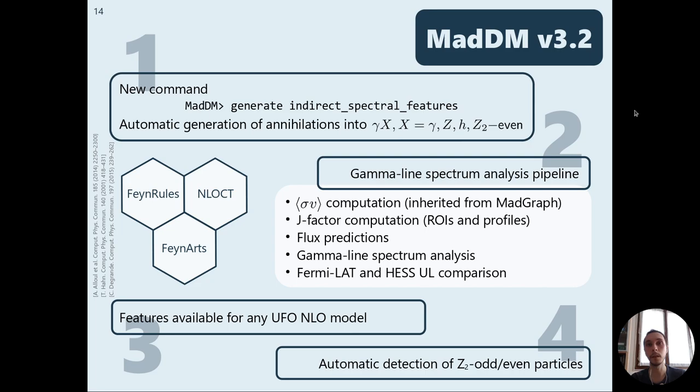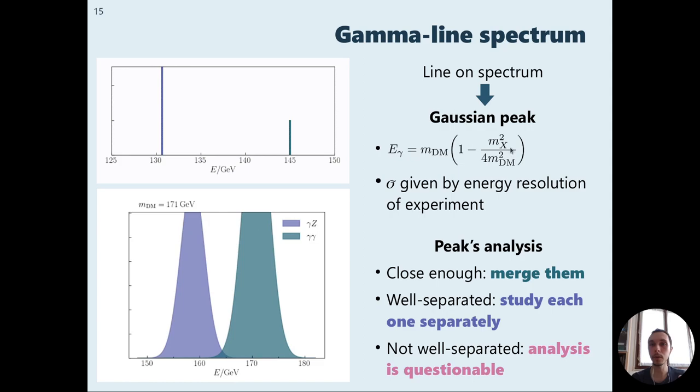Then we have added a new gamma line spectrum analysis pipeline, which is able to do the full analysis of these new final states. In particular, it starts from the sigma v computation, which is a capability inherited from MadGraph. Then we can have the J-factor computation for a variety of region of interest and profiles. Then MadDM can give the flux predictions and it can compare with the experimental constraints from Fermi-LAT and HESS. These features are available for any dark matter models, which should be provided in the UFO NLO format. We need to export the model by using these three Mathematica packages: FeynRules, FeynArts, and NLOCT.